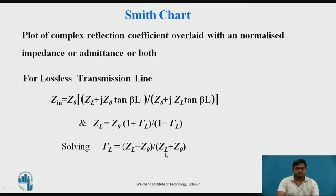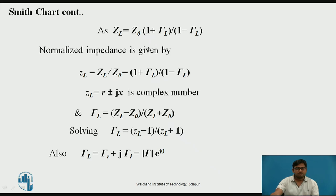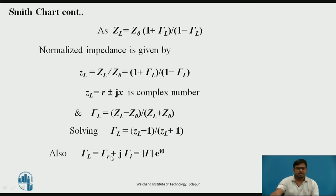Normalizing means dividing the impedance by Z_0 — calculating the quantity per unit characteristic impedance. After normalizing by dividing by Z_0, you get (1 + γ_L) divided by (1 − γ_L), denoted by the small letter r ± jx, where plus is for inductive load and minus is for capacitive load. This complex number can be represented in rectangular form (real and imaginary parts) or polar form (magnitude and phase).